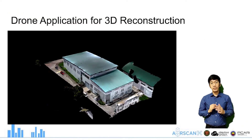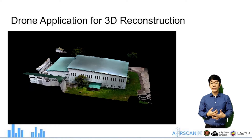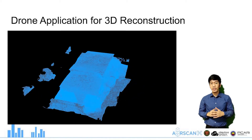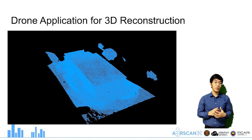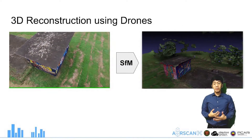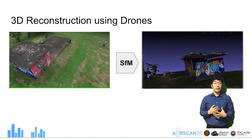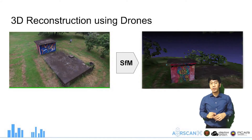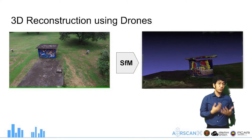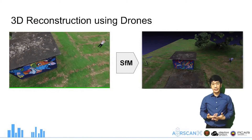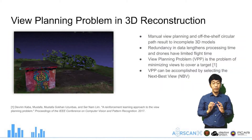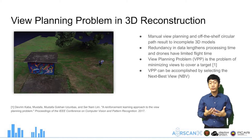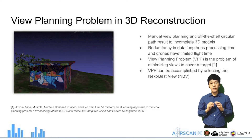3D models of large infrastructure such as buildings provide insights for numerous applications such as construction monitoring, disaster risk management, virtual reality applications, and even cultural heritage conservation. To create 3D models of these large structures, we normally capture images at different viewpoints using drones. These images are then used as input to 3D reconstruction algorithms such as Structure from Motion to create the 3D model of the scene. However, manually selecting viewpoints or using commonly available flight paths like circular paths for large-scale 3D reconstruction often results in incomplete 3D models.